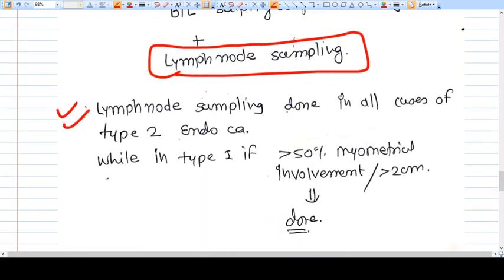Now lymph node sampling is done in almost all cases of endometrial carcinoma, but there are some exceptions. Which are those exceptions?